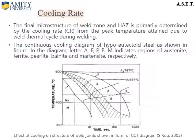The diagram shown here is the cooling diagram for hypo-eutectoid steel. In this diagram, the letters A, F, P, B, and M indicate the regions of austenite, ferrite, pearlite, bainite, and martensite respectively.